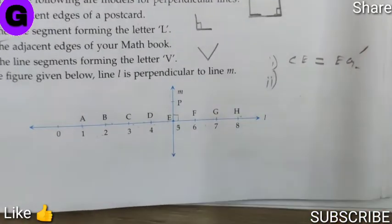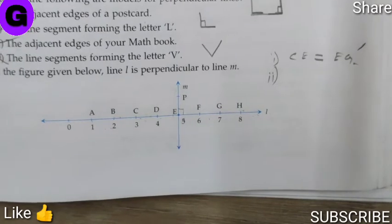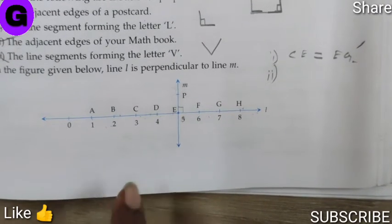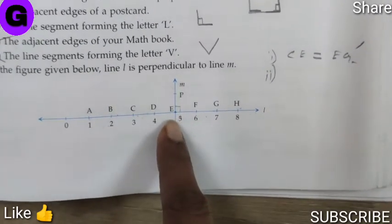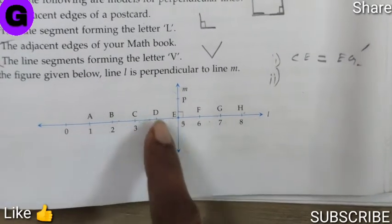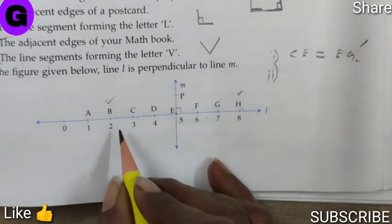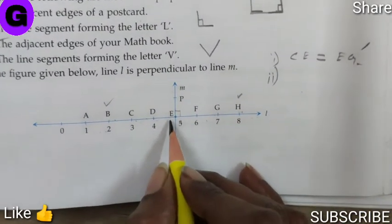Number 2. The second question is, does line PE bisect segment BH? Now, this is line PE. Does it bisect the segment BH? Now, this is B and this is H. Let us count the number of spaces in between.